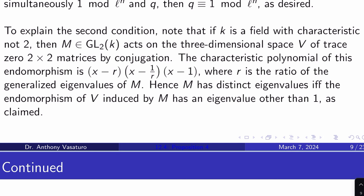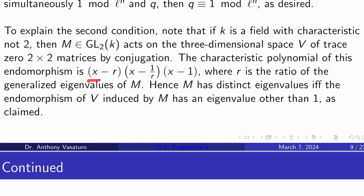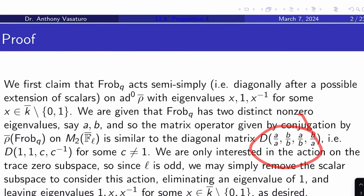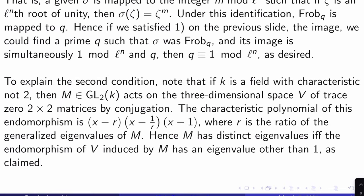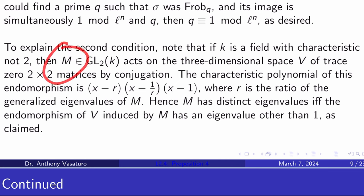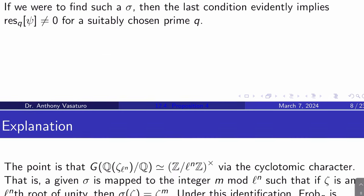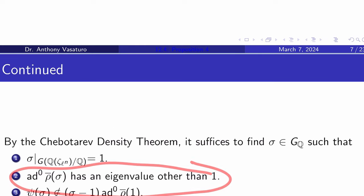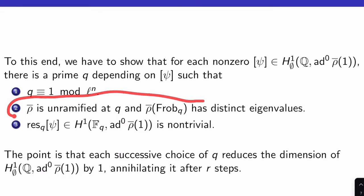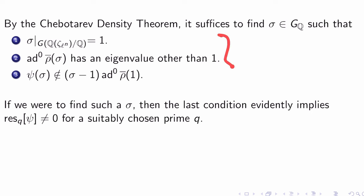For the second condition: if K has characteristic not 2, a matrix M in GL_2(K) acts on the 3-dimensional space V of trace-zero 2×2 matrices by conjugation, and the characteristic polynomial of this endomorphism is (X - r)(X - 1/r)(X - 1), where r is the ratio of the generalized eigenvalues of M. We actually used this fact earlier when writing down the diagonal matrix. Therefore, M has distinct eigenvalues if and only if the endomorphism of V induced by M has an eigenvalue other than 1. So conditions 2 on the original slide and condition 2 here match up.